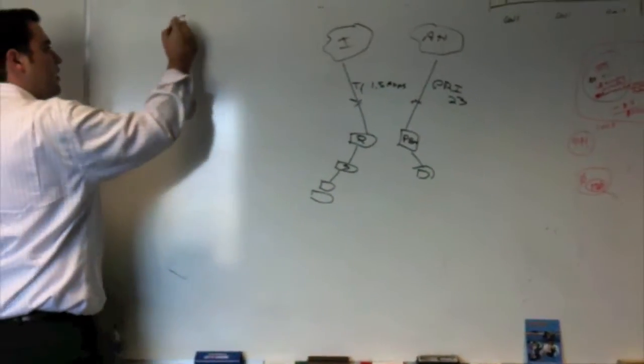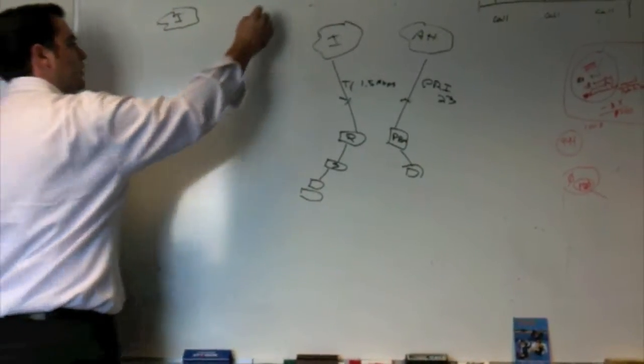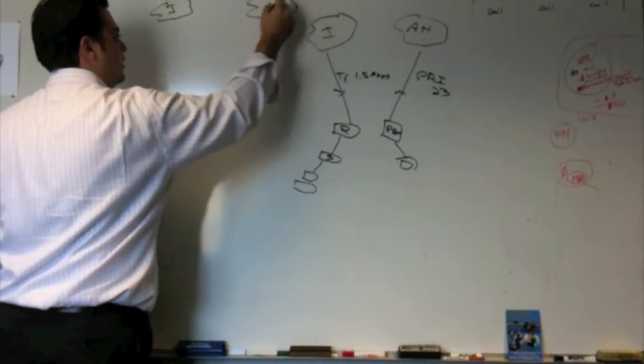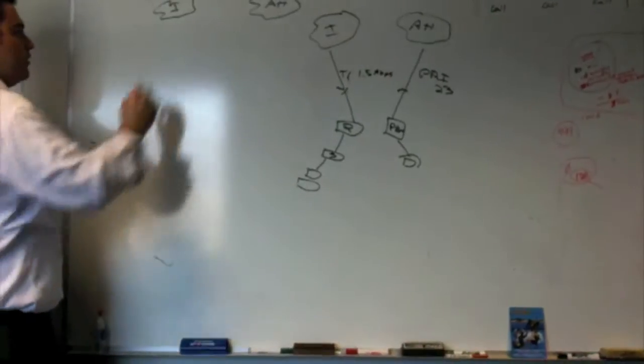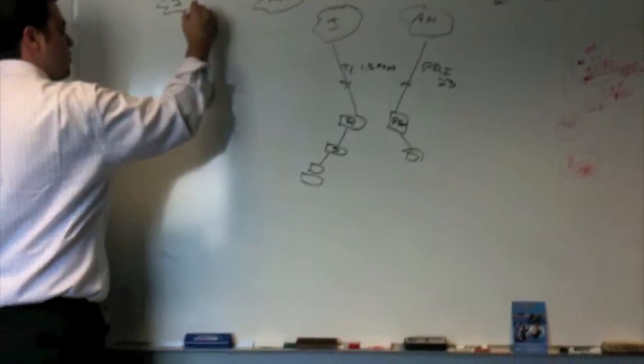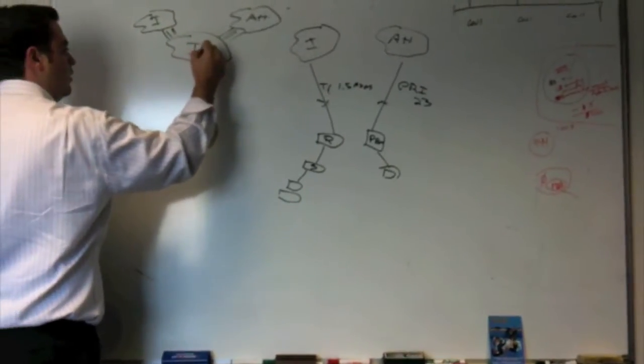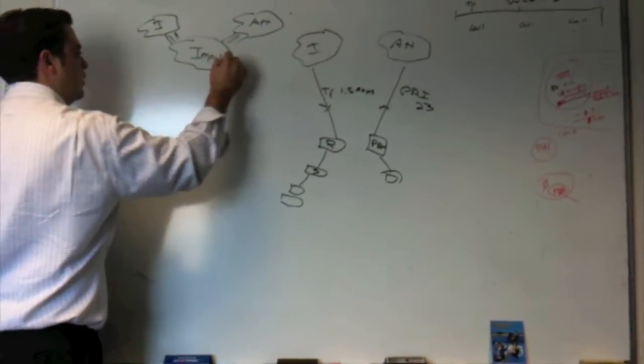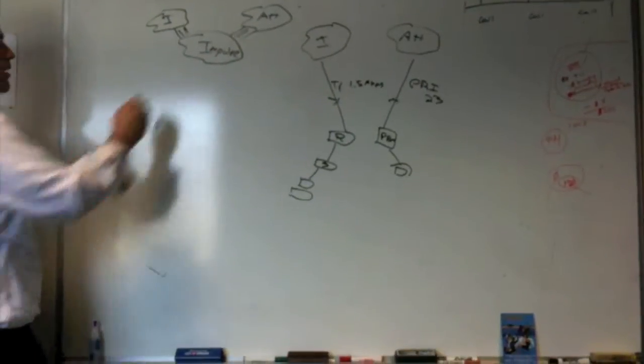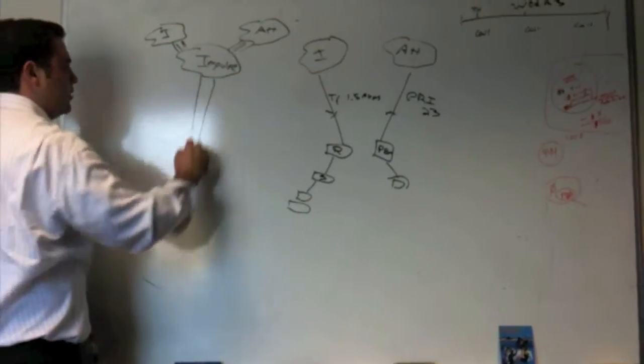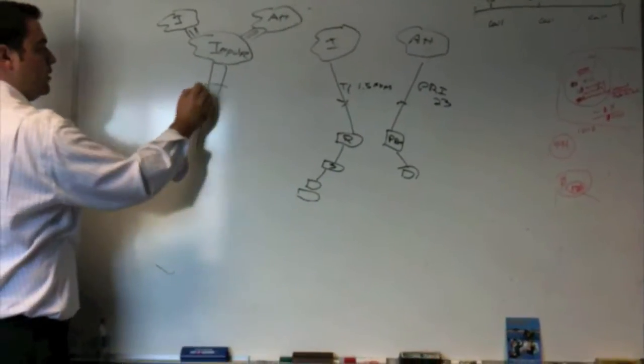So the way Impulse does things is you have your internet, you have your phone lines. Impulse connects with many redundant connections to the telecom network and the internet. Then you get your same two T1s that you had over here, but you bond them together.